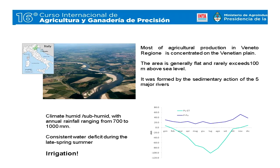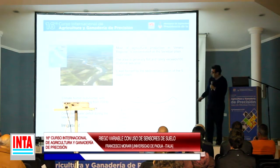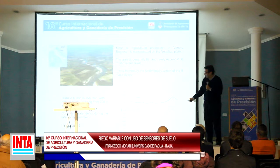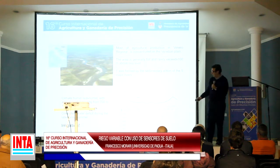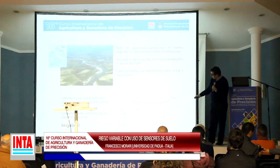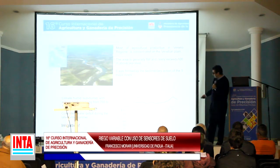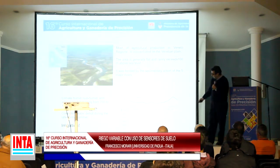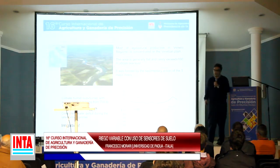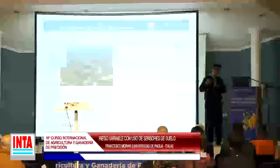Tengan en cuenta esto cuando vean las siguientes diapositivas. In Veneto, the rainfall ranges from 700 to 1000 millimetres. This is the distribution of effective rainfall during the year, and this is the water deficit. During the summer we have a negative balance, so we must irrigate if we want to reach high yields.